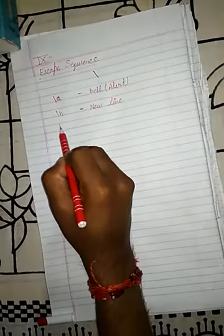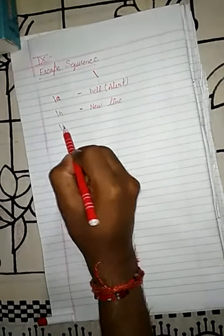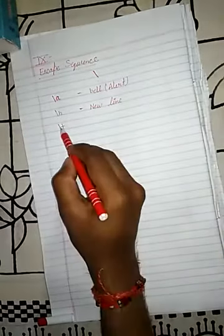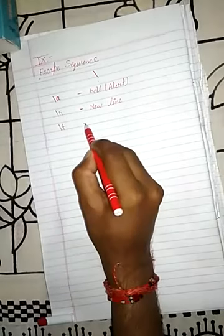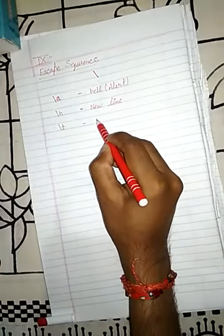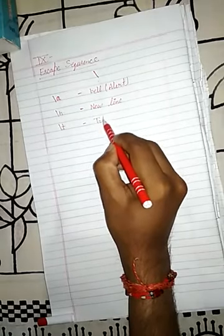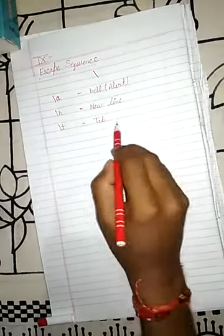Same thing — we can also use \t. If we write t only, then this will be directly printed into the program. But if we write \t, this means it will print a horizontal tab.